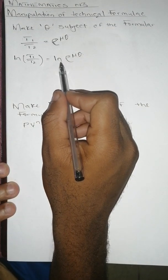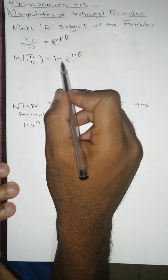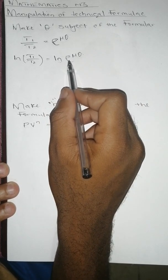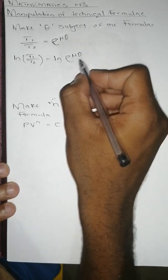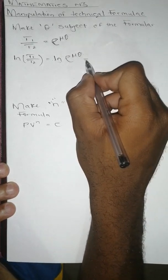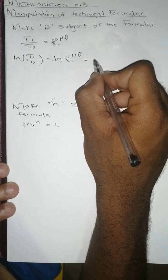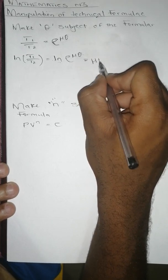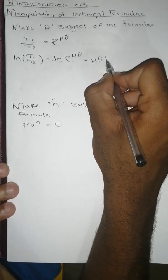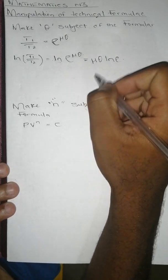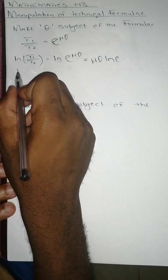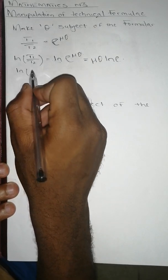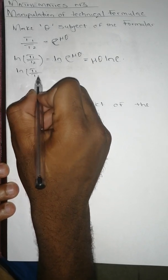We know that with logs, if it's log or natural log of something to the power something, we can bring that power behind here. So it's going to become μθ·ln(e), and ln(e) is one, so we're going to be left with ln(T₁/T₂) equals to μθ·ln(e).